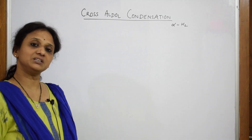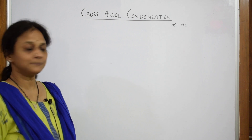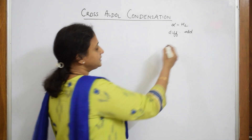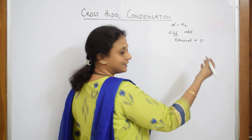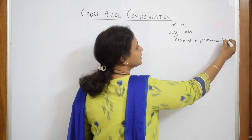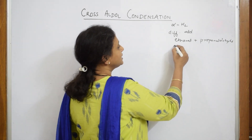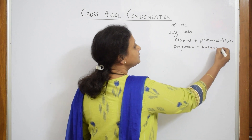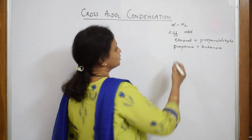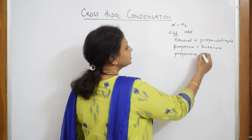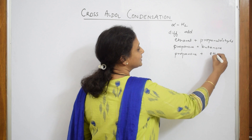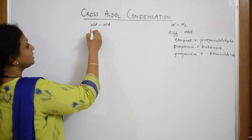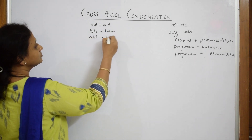What's the difference between aldol and cross aldol? In aldol, two similar aldehydes or two similar ketones combine. But in cross aldol, it can be two different aldehydes — for example, ethanal and propanal. It can also be between two different ketones, for example propanone and butanone. Or it can be a combination between an aldehyde and a ketone, for example propanone and acetaldehyde. So cross aldol is between different aldehyde-aldehyde, ketone-ketone, or aldehyde-ketone combinations.